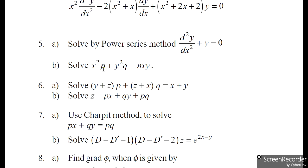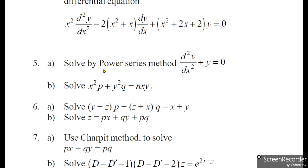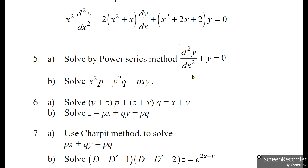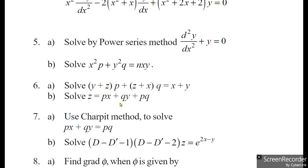Fifth question, part A: Solve by power series method d²y/dx² + y = 0. Part B: Solve x²p + y²q = nxy. Sixth question, part A: Solve (y+z)p + (z+x)q = x+y. Part B: Solve z = px + qy + pq.